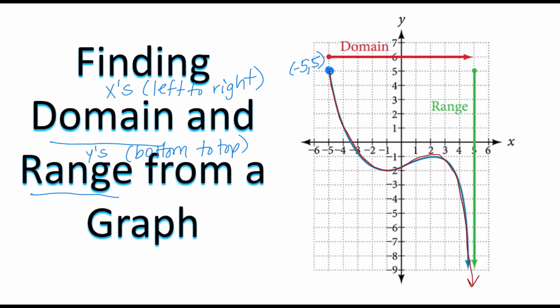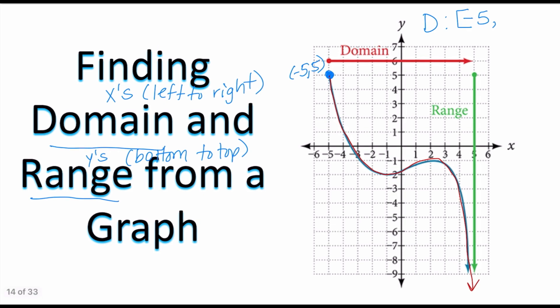That arrow indicates the graph is going to continue forever. So I have a clear beginning — my lowest x-value is going to be negative 5. In interval notation, I am including that negative 5, so I write a bracket: negative 5 comma. The graph continues towards positive infinity on the x-axis, so my domain is from negative 5 to positive infinity. In inequality notation, that means all x-values greater than or equal to negative 5.